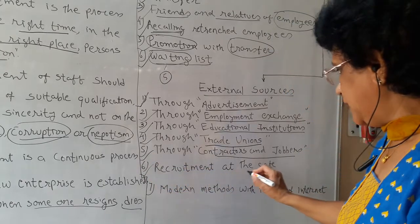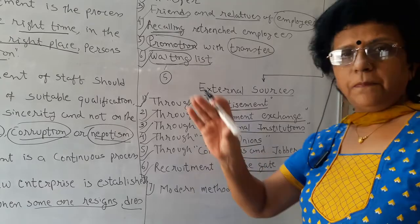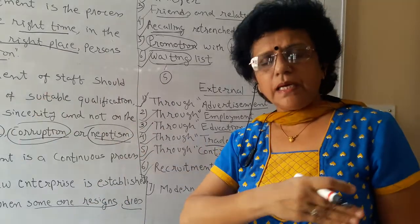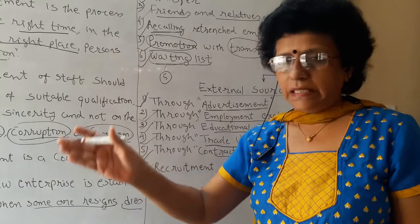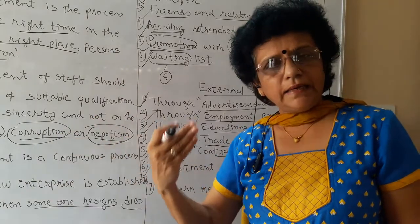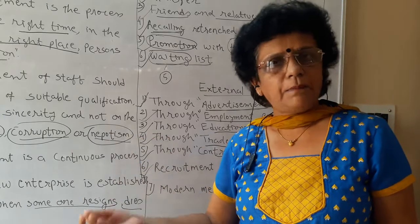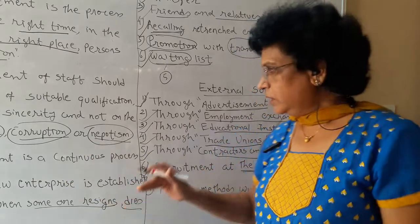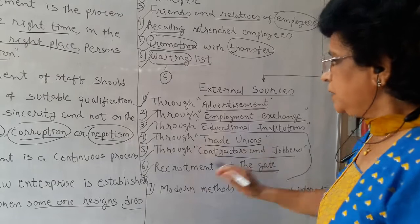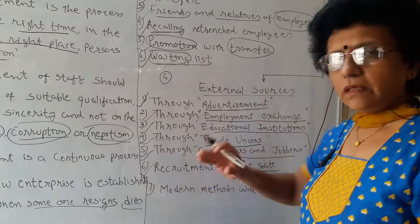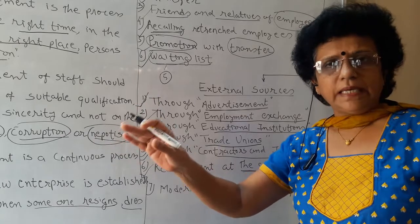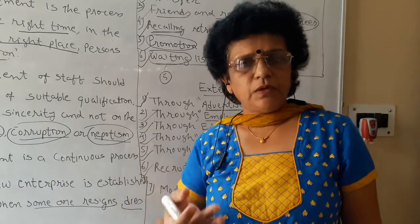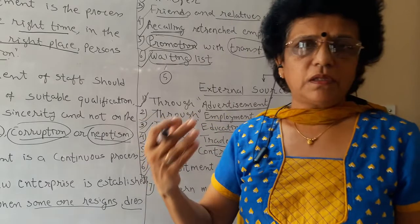The next source is recruitment at the gate. When you put up an advertisement or requirement notice on the gate itself, people passing by read it and, if interested, enter the campus and submit their application. Again for lower-cadre labour requirements, this source is comfortably used. Especially in GIDC areas, recruitment is done this way — they don't spend much money on advertisement and satisfy their need by writing on the gate.